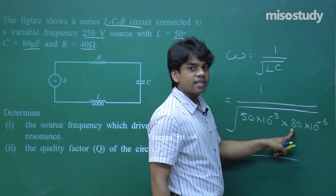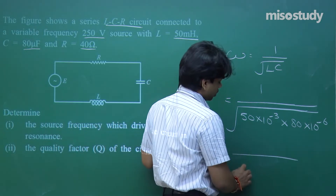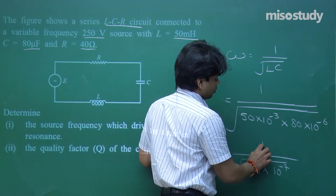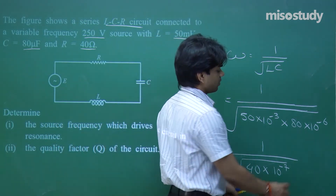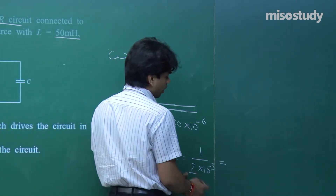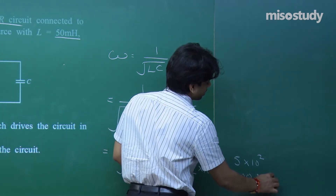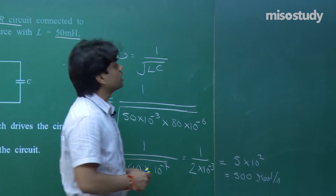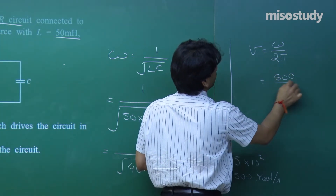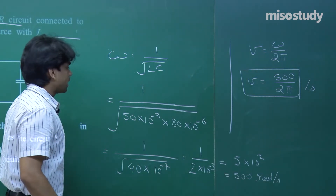Computing: L×C = 50×10⁻³ × 80×10⁻⁶ = 40×10⁻⁷ = 4×10⁻⁶. So ω = 1/√(4×10⁻⁶) = 1/(2×10⁻³) = 0.5×10³ = 500 radian per second. This is the angular frequency. If you are interested in finding the linear frequency, it is given as f = ω/(2π) = 500/(2π) Hz.